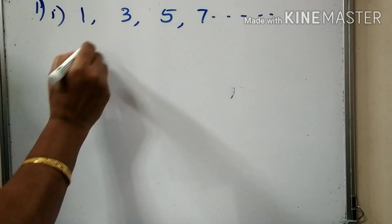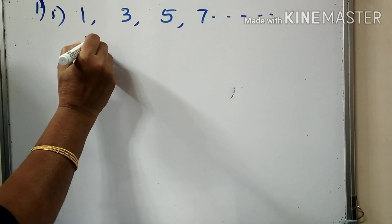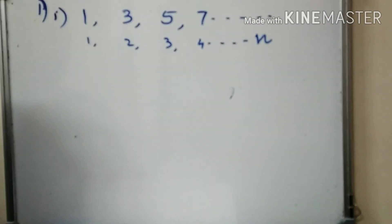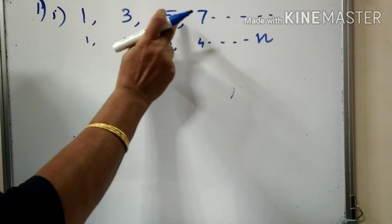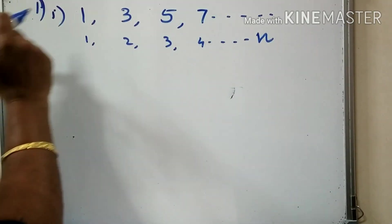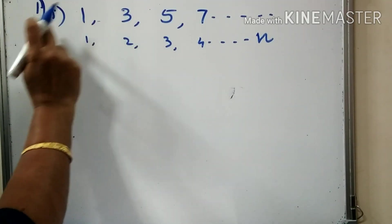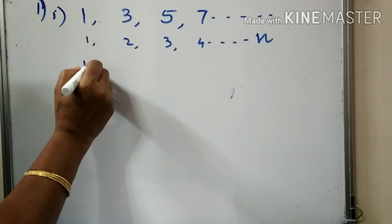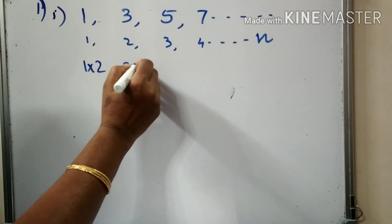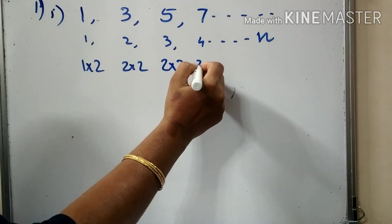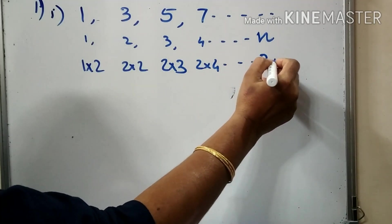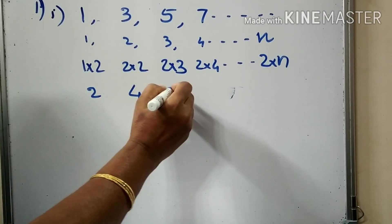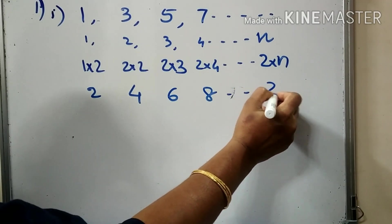This is the natural numbers: 1, 2, 3, 4, etc. This is the sequence of odd numbers. The sequence: 4, 6, 8... last one: 2N.